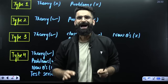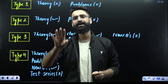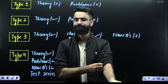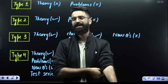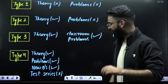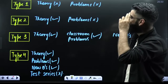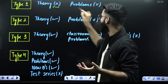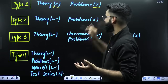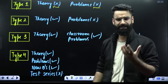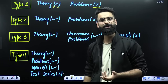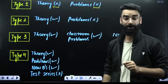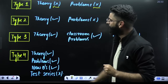First of all, I believe there are four types of students among you. The first type of students are the ones who are unable to understand the theory portion as well as unable to do the problems. That is your type 1 category.